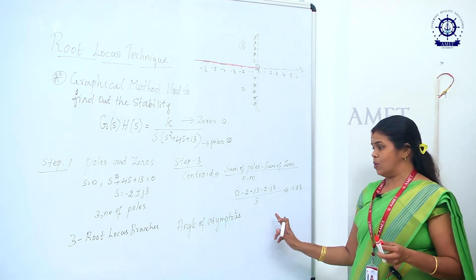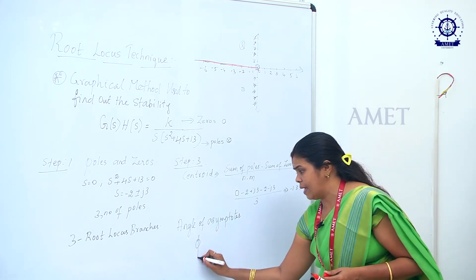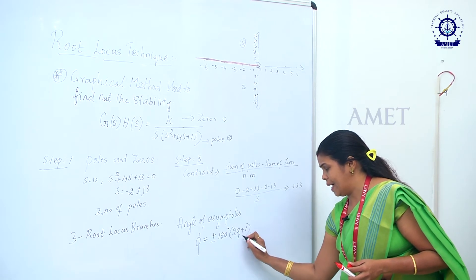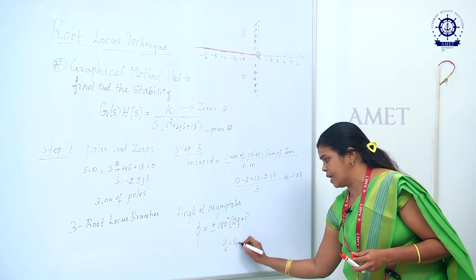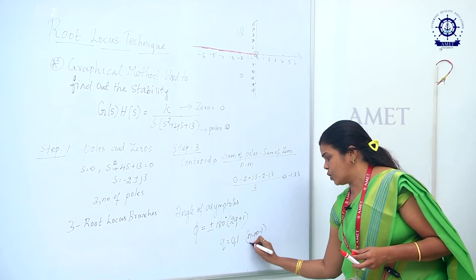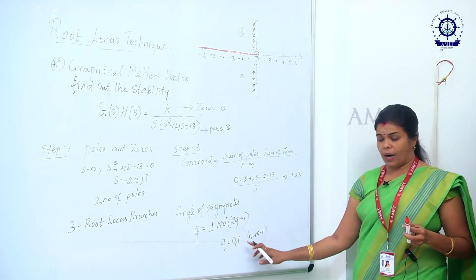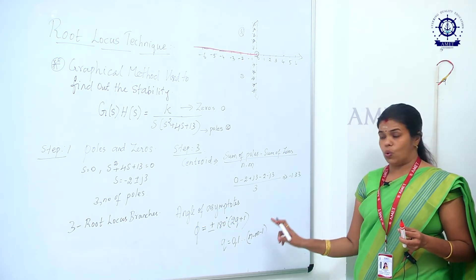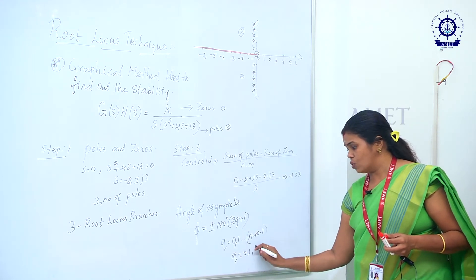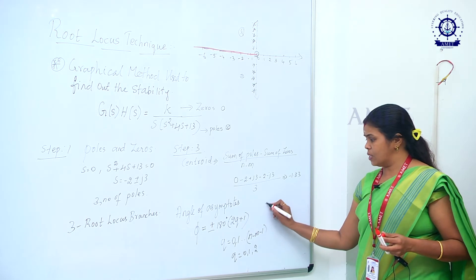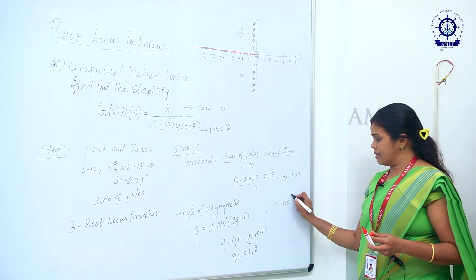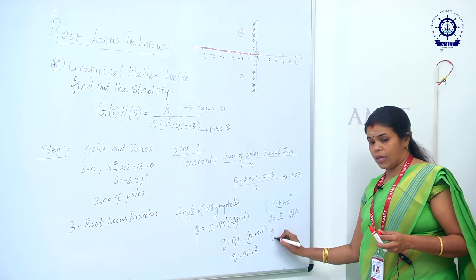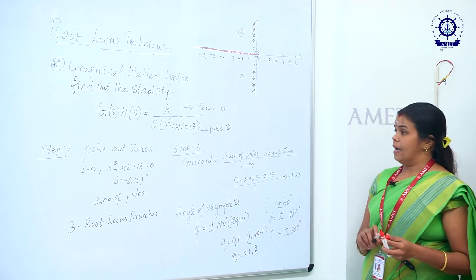Then we find the angle of asymptotes. The formula is φ = ±180°(2q + 1), where q varies from 0, 1, ... up to n − m − 1 = 2. Substituting: for q = 0, φ = ±60°; for q = 1, φ = ±180°; for q = 2, φ = ±300°. These are the angles of the asymptotes.